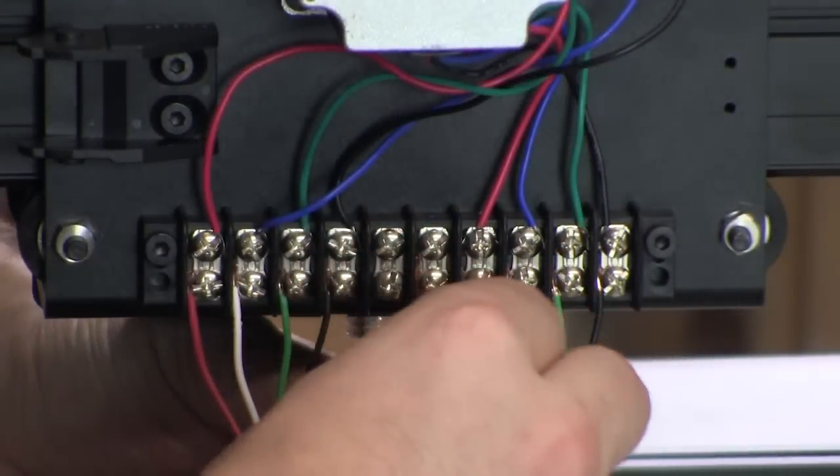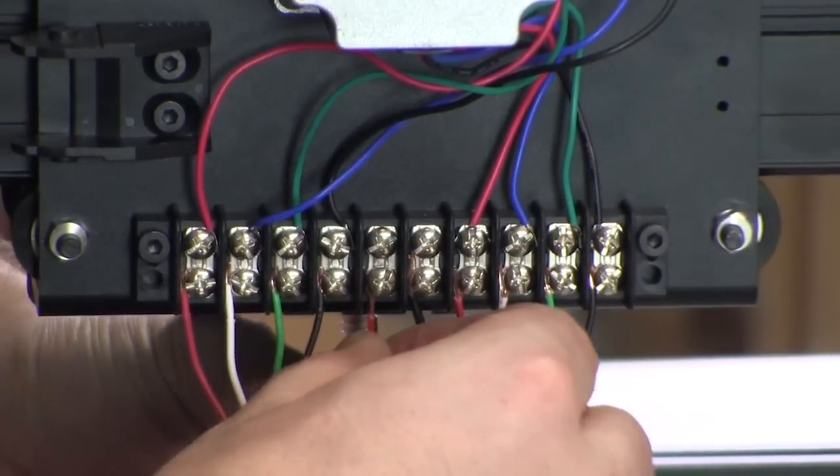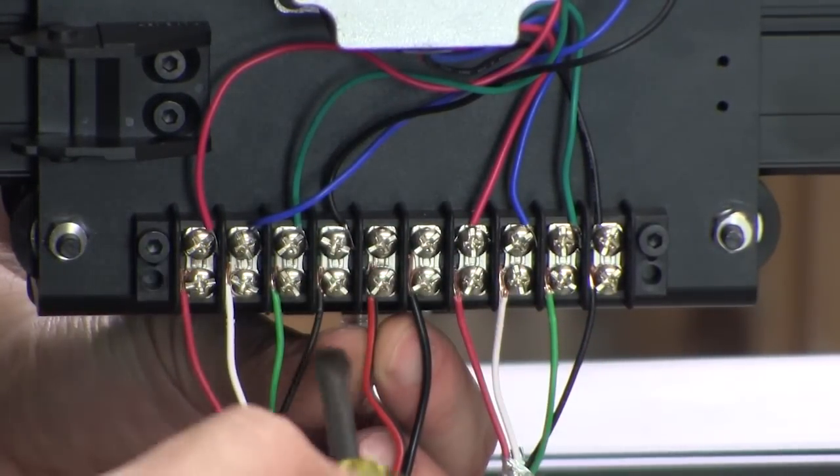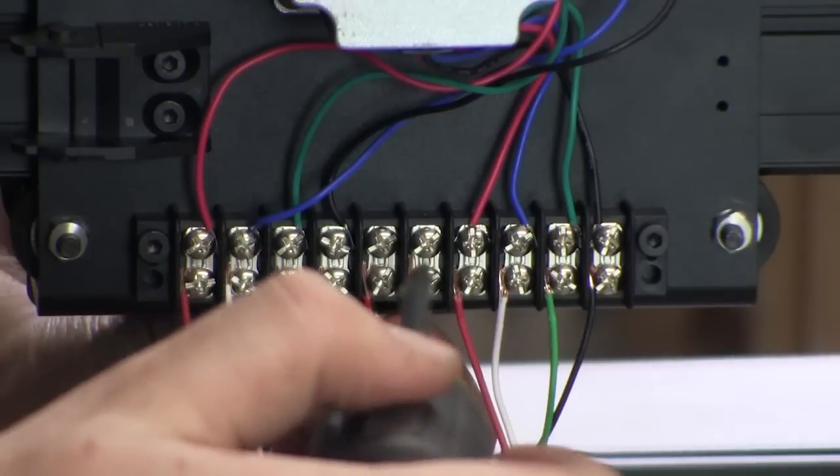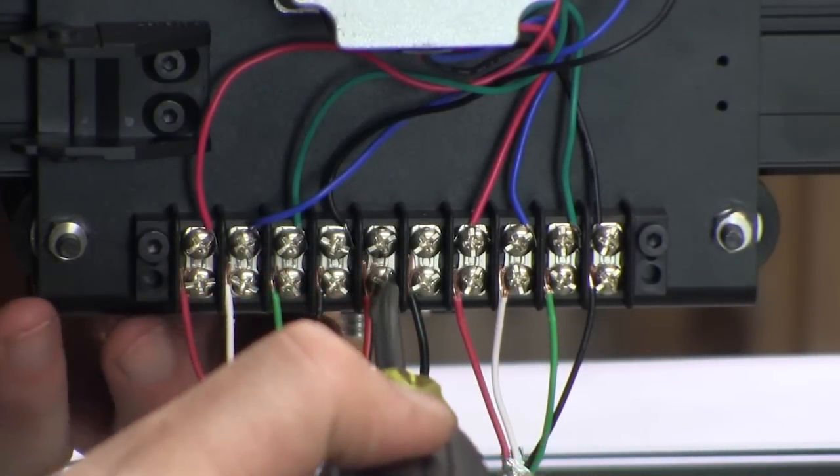If you purchased a spindle with your kit that requires wiring, put the zip wire into the middle two terminals, black on the right, red on the left, on the bottom of the terminal block.